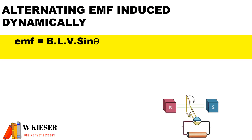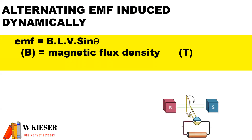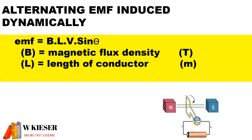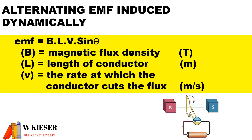For alternating EMF induced dynamically, we use the formula: the EMF — the instantaneous value — is equal to the maximum value multiplied by sine theta. To calculate the maximum value, it is the magnetic flux density in Tesla, multiplied by the length of the conductor in metres, multiplied by the velocity at which the coil turns in metres per second.